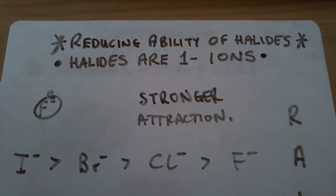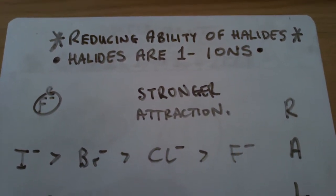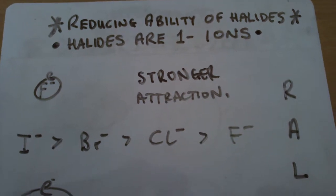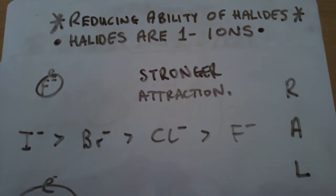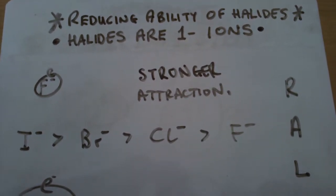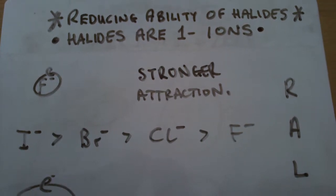The reducing ability of the halide ions. The halides are all 1- ions, and you can see the trend in the middle there: I- is better than Br-, which is better than Cl-, which is better than F- at losing their electrons.